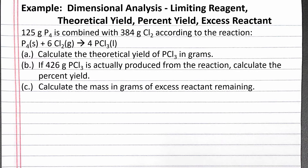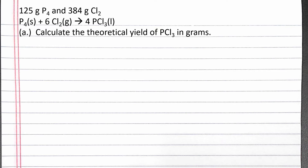In this problem, we're given amounts of two different reactants, so we need to determine which one runs out first. This is a limiting reagent problem. To calculate the theoretical yield, we need to determine how much product can be produced from each amount of reactant. Whichever produces less product is the limiting reagent, and the amount it can produce is the theoretical yield.